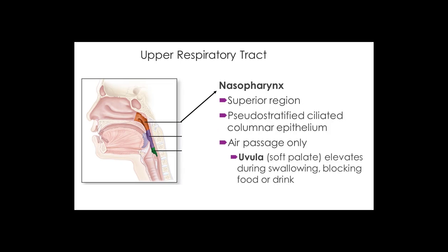The nasopharynx has what is referred to as respiratory epithelium — pseudostratified columnar ciliated epithelium. If you ever hear 'respiratory epithelium,' you immediately know it means pseudostratified ciliated epithelium, because there's no pseudostratified cuboidal or squamous — only columnar. You find this characteristic respiratory epithelium in the nasopharynx.